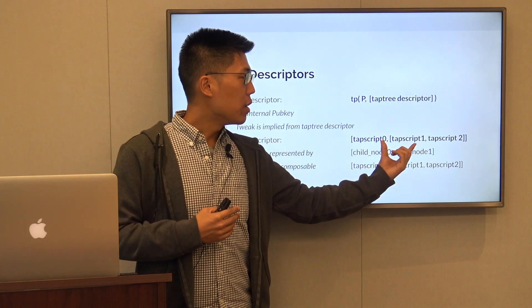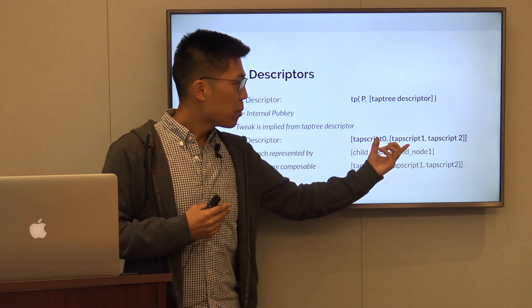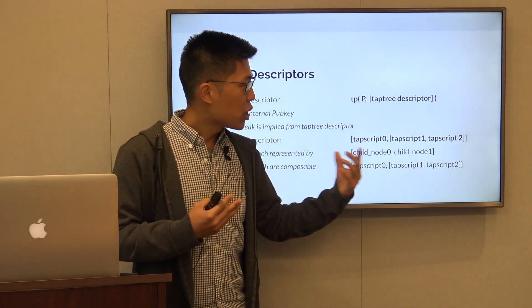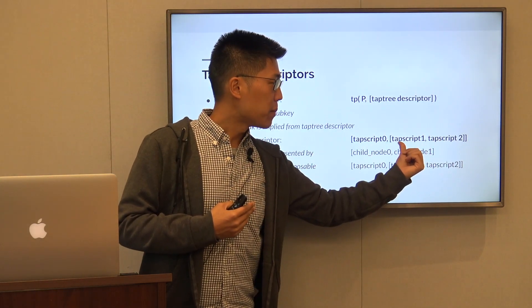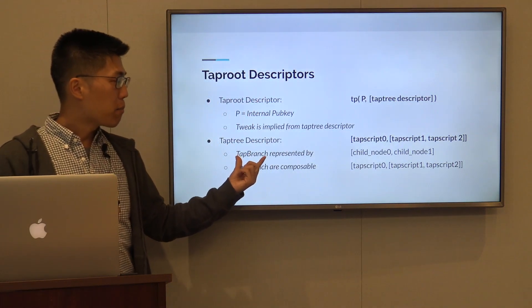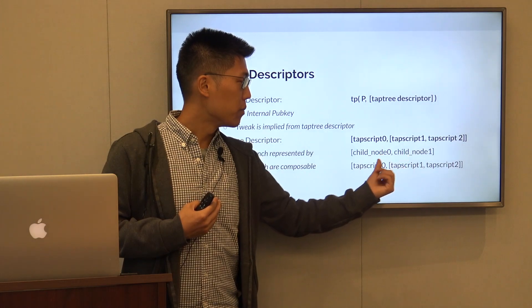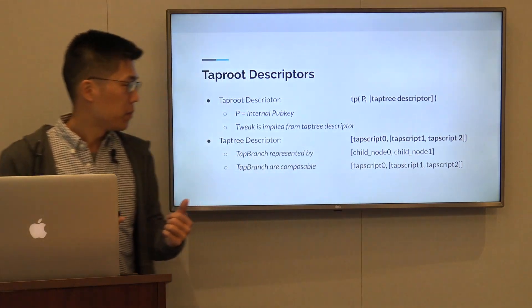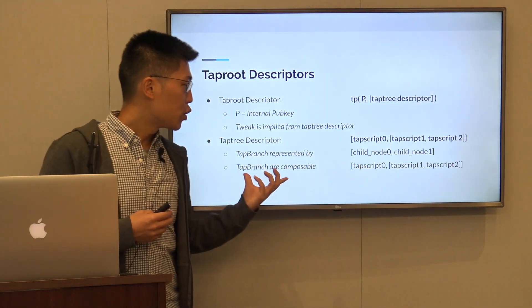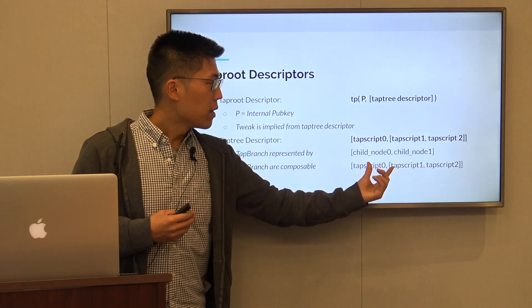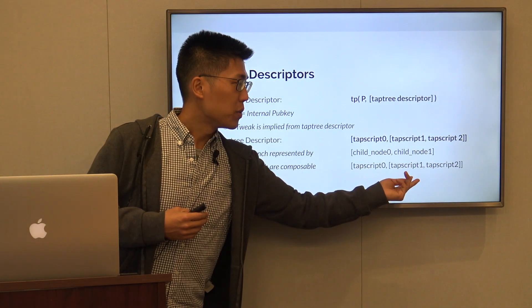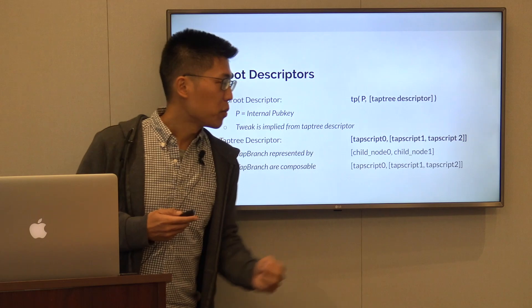At the top level, we have the root node. In this example, we have the left child, which is TAP script 0, and we have a right child, which is the parent of TAP script 1 and TAP script 2. Each TAP branch or internal node is represented by its two children, child node 0 or child node 1. Because we're nesting these nodes, the expression is composable, meaning that the right child of this root node is expressed by its children: TAP script 0, TAP script 1, and TAP script 2.